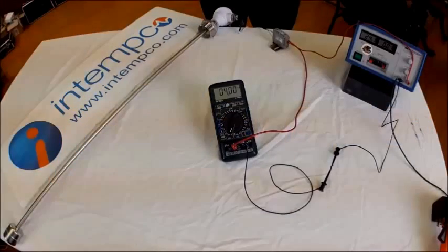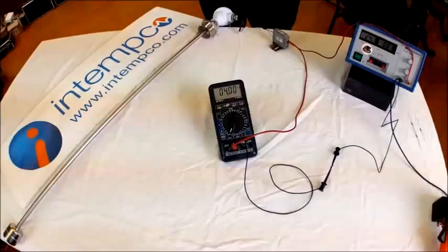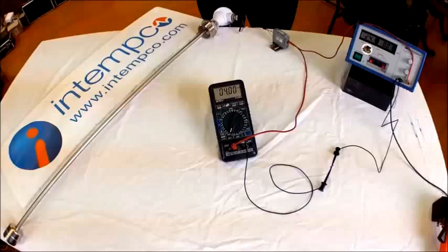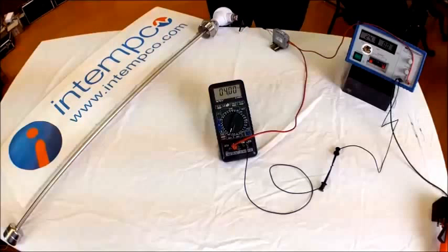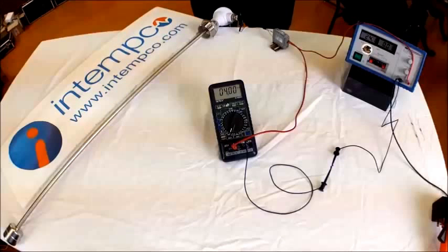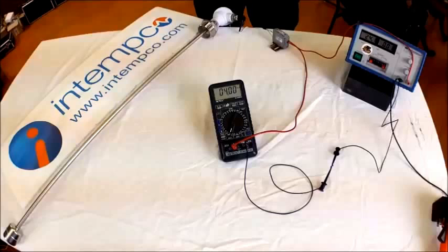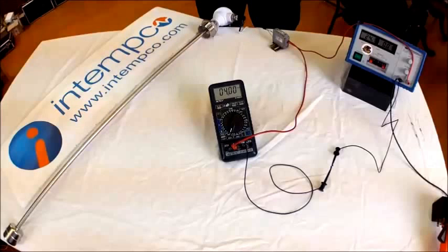This is a presentation from Intemco, a quality supplier of industrial and hygienic sensors. Today we are going to explain how a sensor uses a 4 to 20 milliamp current loop to indicate a measurement and how to troubleshoot these systems.